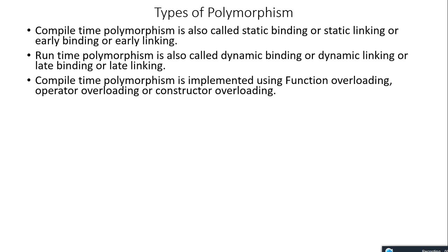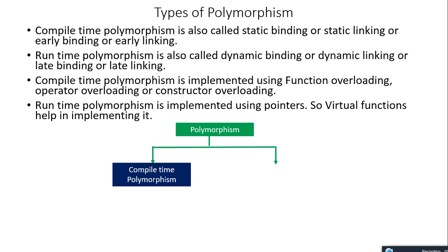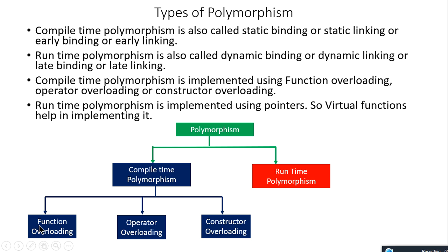Compile-time polymorphism is implemented in three ways. Some books say two types, but I consider constructor overloading as also part of polymorphism. So according to me, there are three types: function overloading, operator overloading, and constructor overloading. Runtime polymorphism is implemented using pointers — implementing virtual functions is an example of runtime polymorphism.